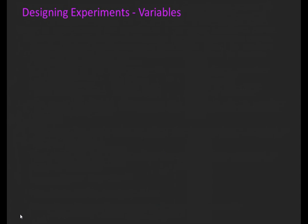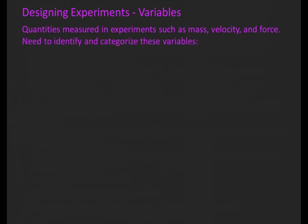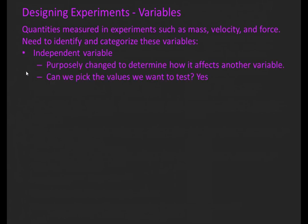Now, let's talk about variables. Variables are quantities measured in experiments such as mass, velocity, and force. We need to identify and categorize these variables into three broad categories. The independent variable is purposely changed to determine how it affects another variable. If you ask yourself, 'Can I pick the values of this variable?' and you answer yes, then it's probably the independent variable.